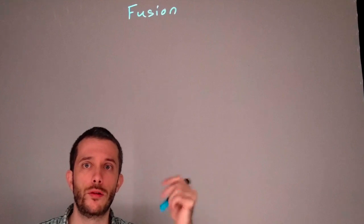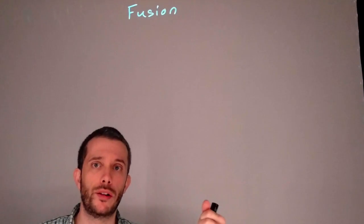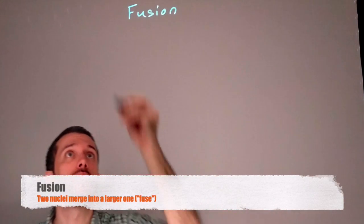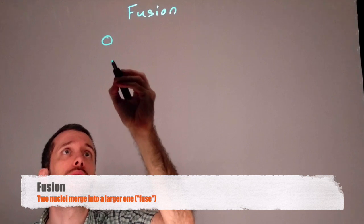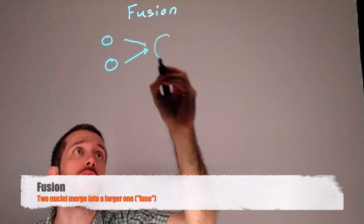Fusion is a nuclear reaction in which two smaller nuclei merge to build one bigger one. So we have a small one here and a small one here. They merge together to build one bigger one.